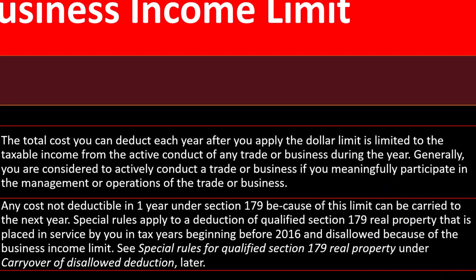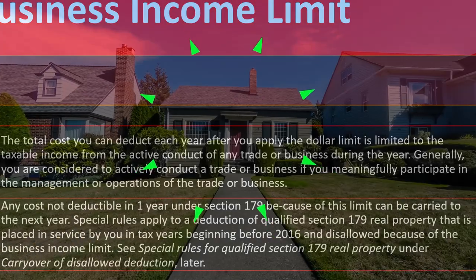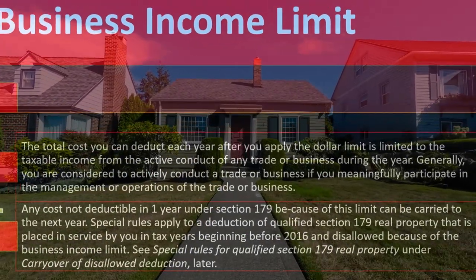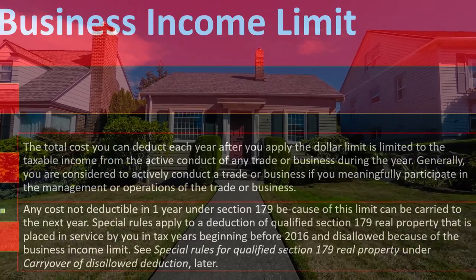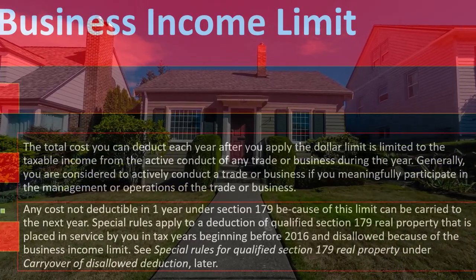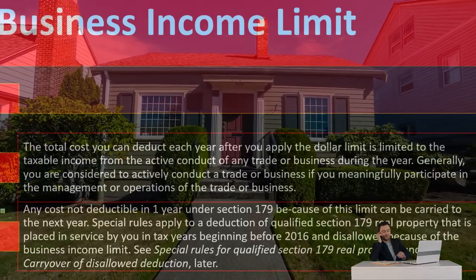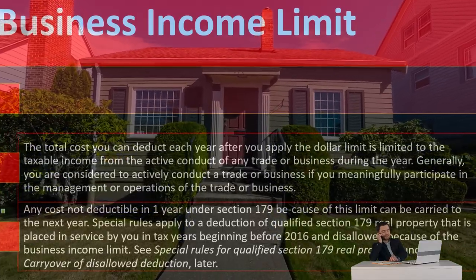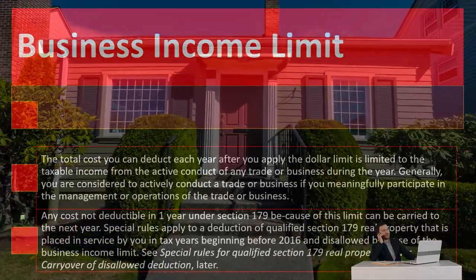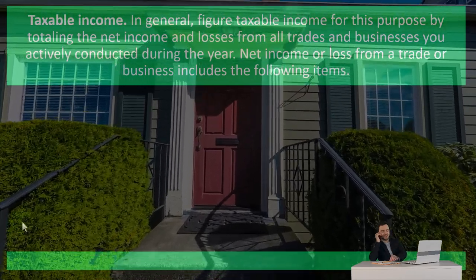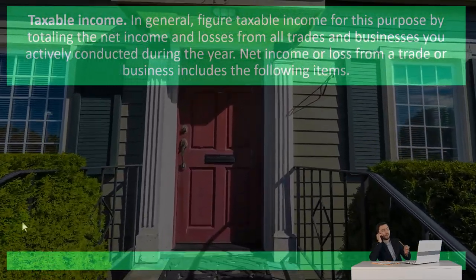Special rules apply to the deduction of qualified Section 179 real property placed in service in tax years beginning before 2016 that was disallowed because of the business income limit. See 'Special Rules for Qualified Section 179 Real Property' under 'Carryover of Disallowed Deduction.' To figure taxable income for this purpose, total the net income and losses from all trades and businesses you actively conducted during the year.